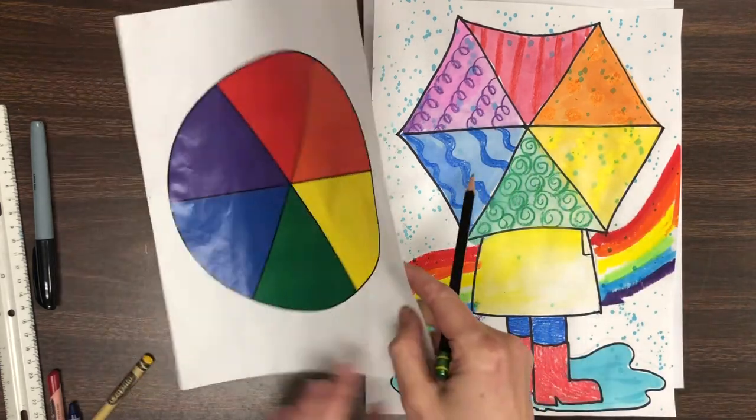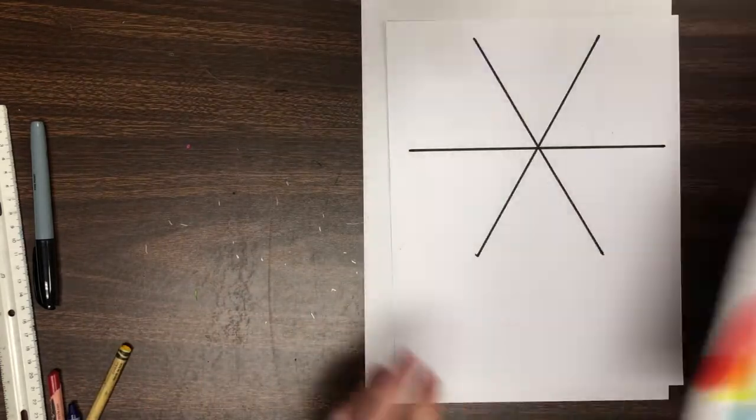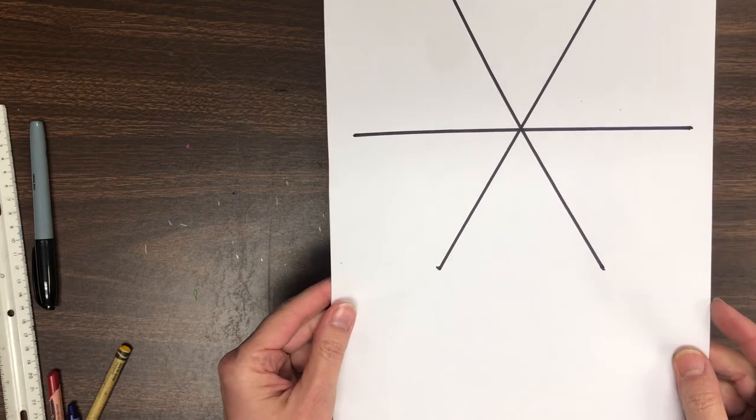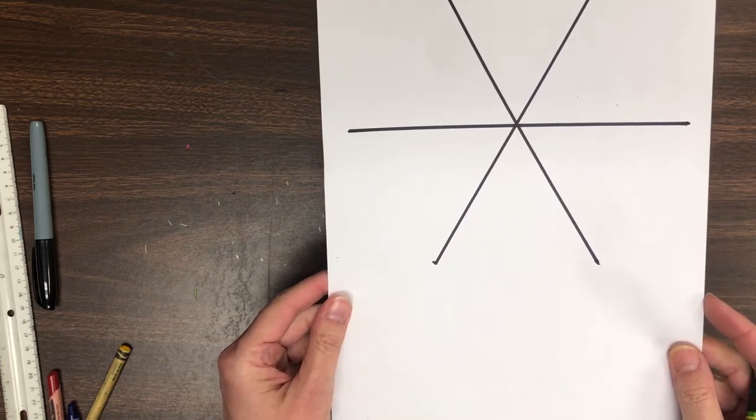Did you notice how the rainbow is kind of like a color wheel too? This is what I have uploaded in Schoology. You can print it out and just use that as your art lesson.